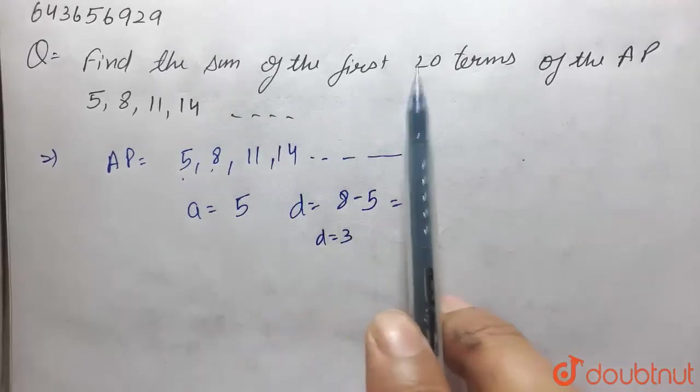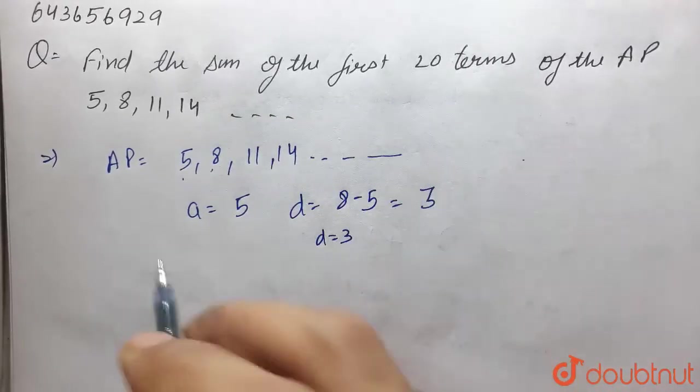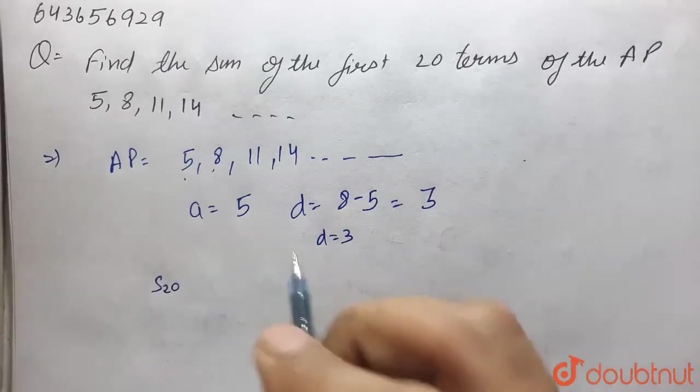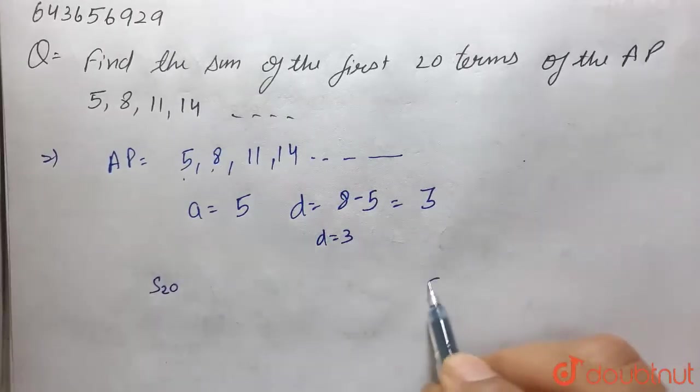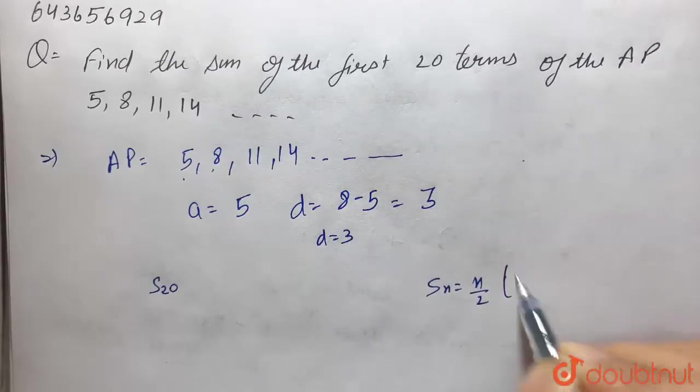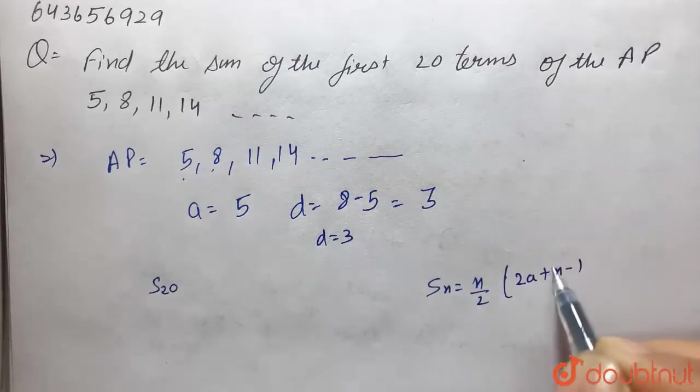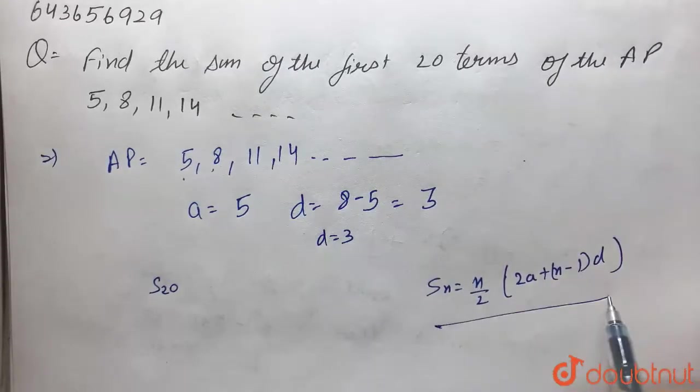Here we have to find the sum of first 20 terms. We know that sum of n terms equals n/2 into 2a plus (n-1) into d. So using this formula,